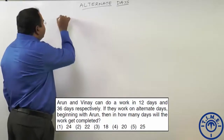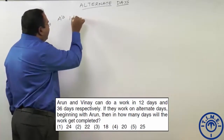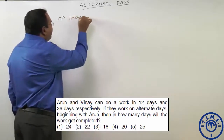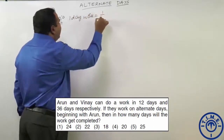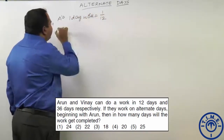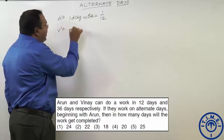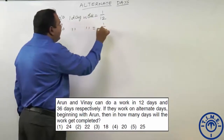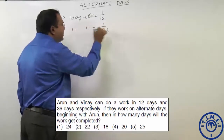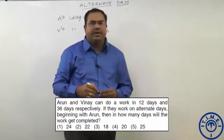Arun's one day work is 1/12. Vinay's one day work is equal to 1/36. This is an important concept.